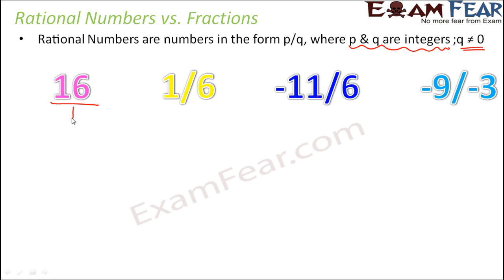It is actually, 16 actually means 16 by 1. So again you have a number in the form of p by q where p and q are integers. So these are all examples of rational numbers.